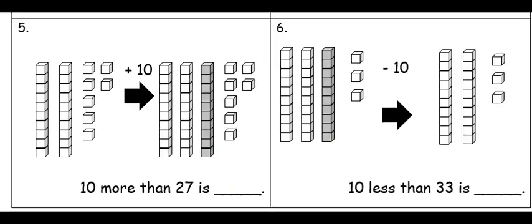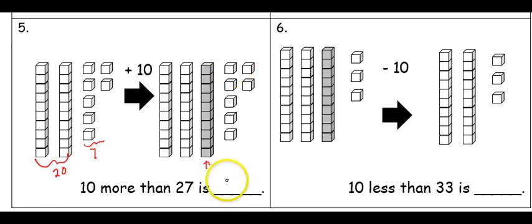Here we'll follow the same process, only this time we're asking for ten more or ten less. The first problem says what is ten more than twenty-seven. I'm starting off with my two tens and seven ones to show twenty-seven. In the second picture, I added another group of ten, showing plus ten. So now I have three groups of ten and seven ones for a total of thirty-seven.